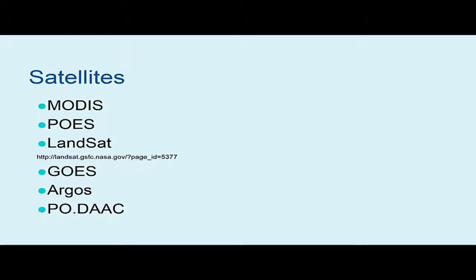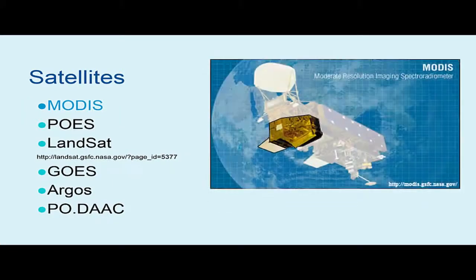Another way to collect physical and biological information about the ocean is through the use of satellites. The Terra and Aqua satellites are part of the Earth-observing systems. They carry MODIS, the Moderate Resolution Imaging Spectroradiometer. Terra and Aqua MODIS are viewing the entire Earth's surface every one to two days, acquiring data in 36 spectral bands. This data will improve our understanding of global dynamics and processes occurring on the land, in the oceans, and in the lower atmosphere.